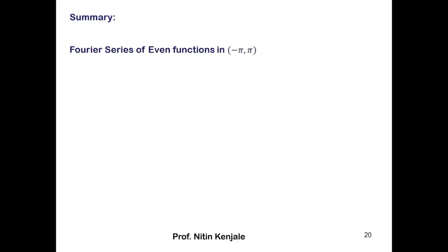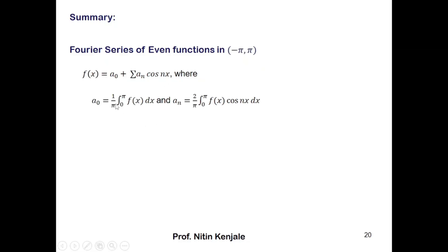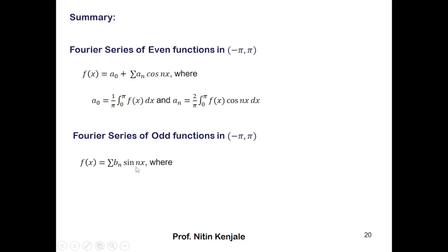To summarize: the Fourier series of an even function in the interval minus pi to pi is given by a-naught plus summation of aₙ cos(nx), where a-naught is 1 over pi times the integral of f(x) dx from 0 to pi, and aₙ is 2 over pi times the integral of f(x) cos(nx) dx from 0 to pi. If f(x) is an odd function in the interval minus pi to pi, its Fourier series is given by summation of bₙ sin(nx), where bₙ is 2 over pi times the integral of f(x) sin(nx) dx from 0 to pi. In both summations, n runs from 1 to infinity.